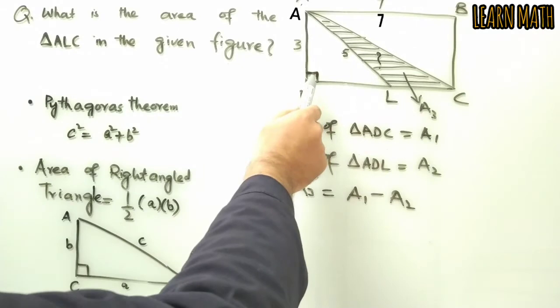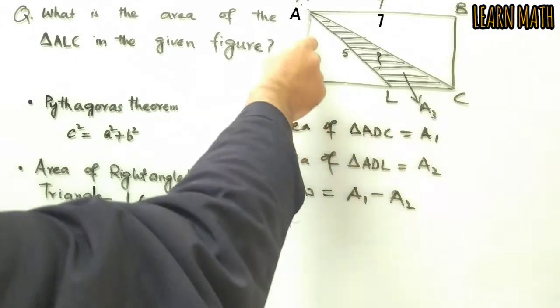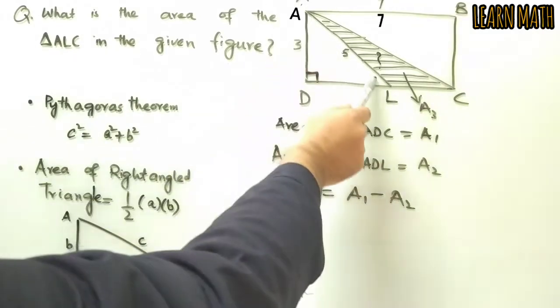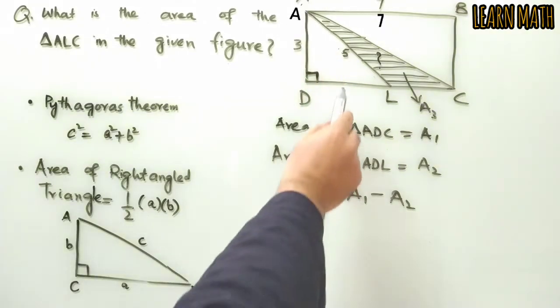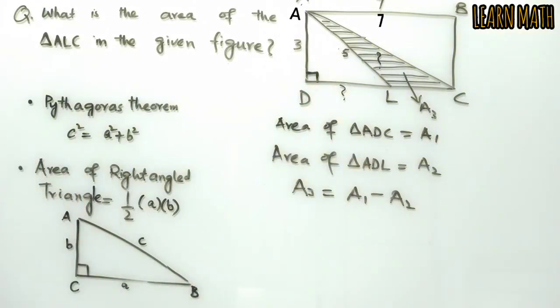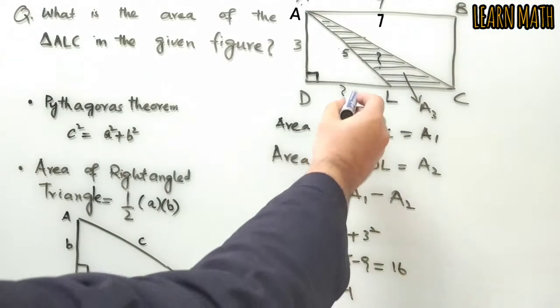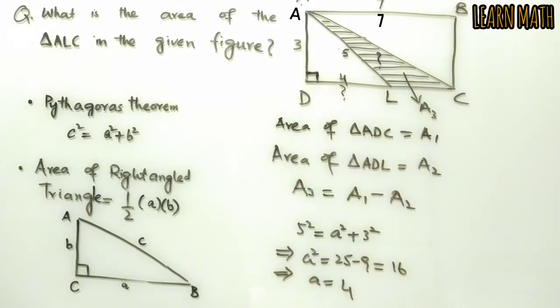How to calculate the area of this triangle? In this triangle, the perpendicular is given as 3 and the hypotenuse is given as 5, but we don't have this side. Using Pythagoras theorem, we can write: 5² = a² + 3². This will be a² = 25 - 9 = 16, and a will be equal to 4.